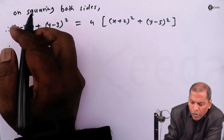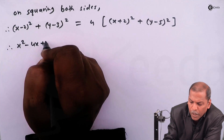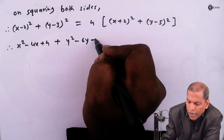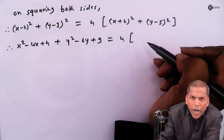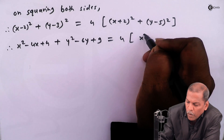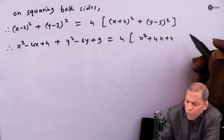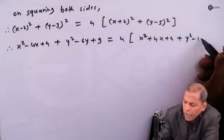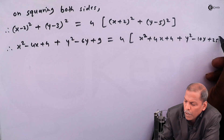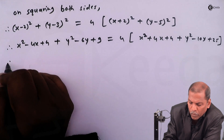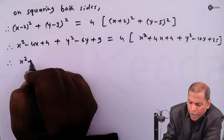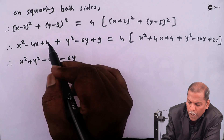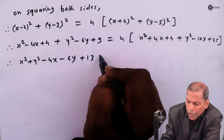On simplifying the brackets we get: x squared minus 4x plus 4 plus y squared minus 6y plus 9, that is equal to 4 times [x squared plus 4x plus 4 plus y squared minus 10y plus 25]. So on the left side we get x squared plus y squared minus 4x minus 6y plus 13.